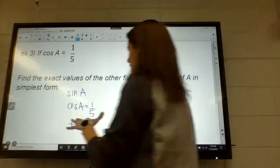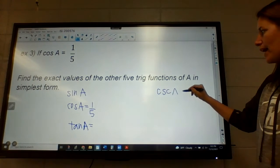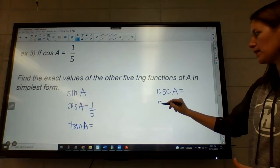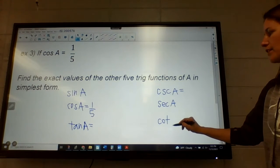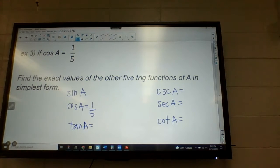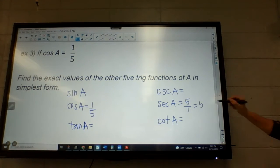Tangent of A, and then all the flipped ones. So when I do this, right away, I just write this so I kind of have them matched up. Even without drawing the triangle, I can do one of them. Which one do I know without even drawing the triangle? Sec of A. Yeah, sec of A. So I can flip that over. That's five over one or just five.